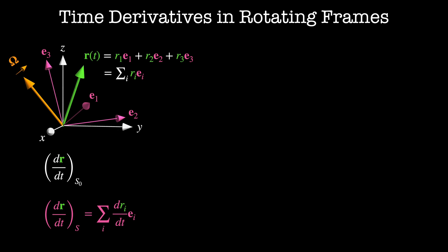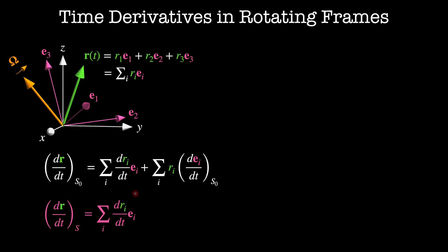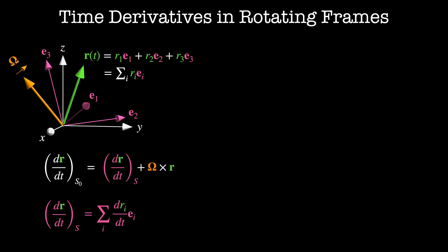In the inertial frame, ei is changing with time, so we use the product rule. In addition to the sum on i of dri by dt times ei, we have the additional term: the sum on i of ri times dei by dt. The derivative of a quantity in a rotating frame is omega cross that quantity, so this term is omega cross ei, which becomes omega cross r. Therefore, the rate of change of r in the inertial frame equals the rate of change of r in the rotating frame plus omega cross r.